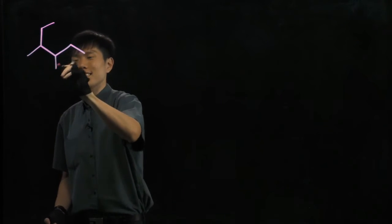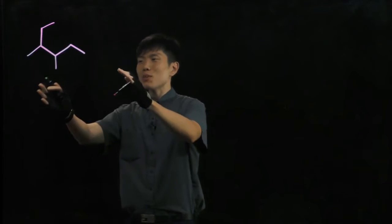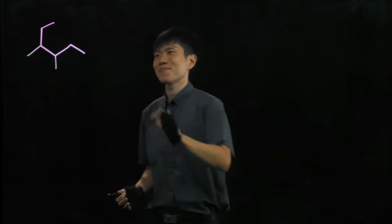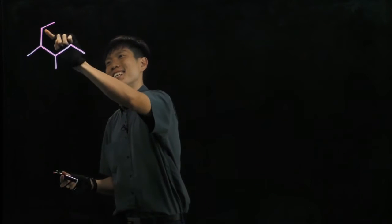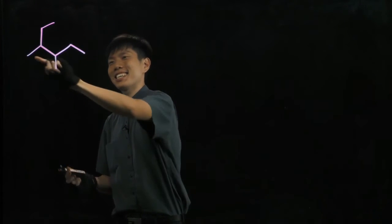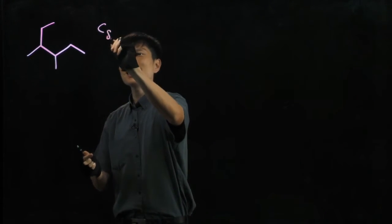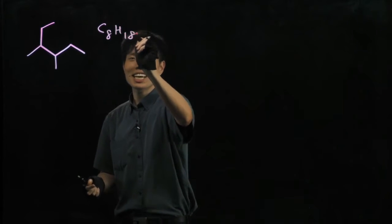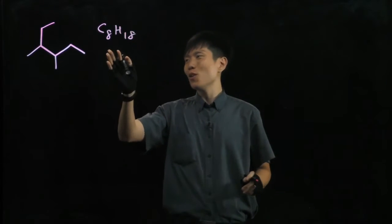Here I'm going to teach you how to name alkanes. Let's start by revising. What is the chemical formula for this structure? Quick, C8H18. I hope all of you got it right.